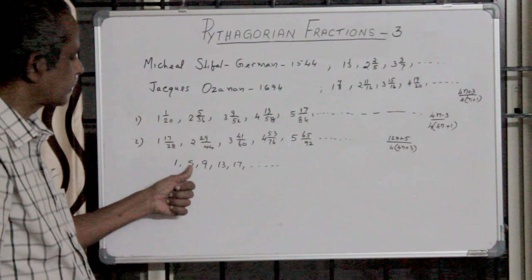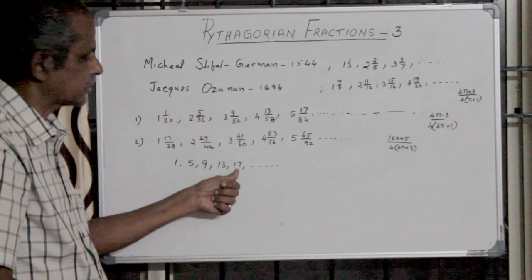1 plus 4 is 5, 5 plus 4 is 9, 9 plus 4 is 13, 13 plus 4 is 17, etc.